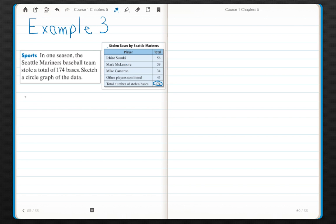The first thing I need to do, step one, is to find each percent. You want to make sure that you label your work so that you know who you're talking about. Suzuki took 56 of the 174 stolen bases. Feel free to use a calculator to do this division. This is about 32%. Go ahead and round to the nearest whole number.